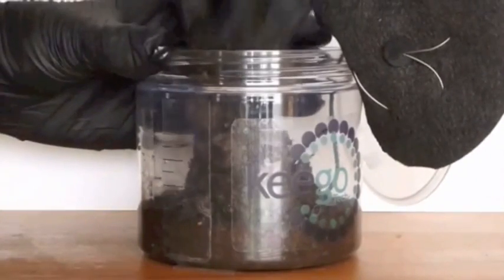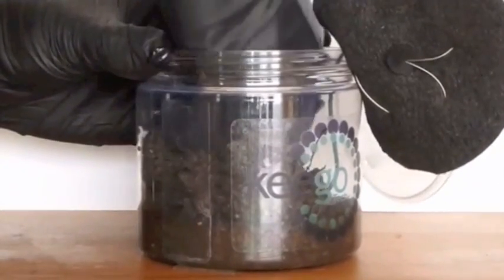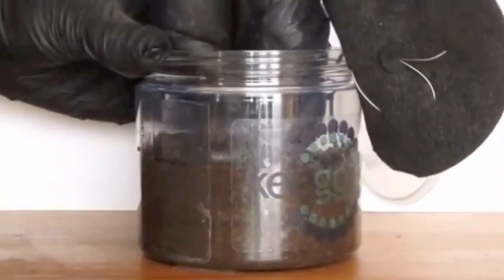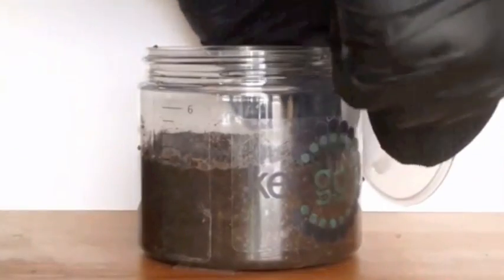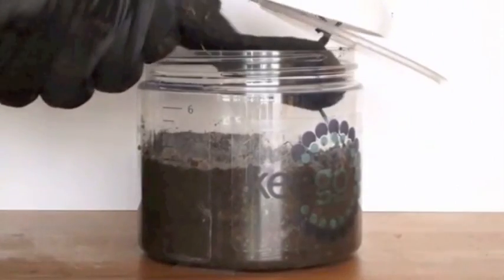Alright, let's have a look at our biobattery. We bury the anode in our soil. Make sure there are no air bubbles in the soil. It has to be anaerobic.